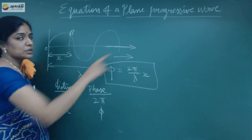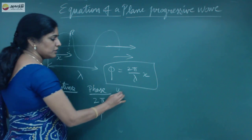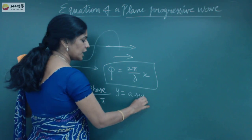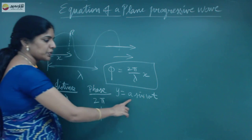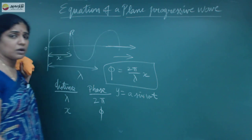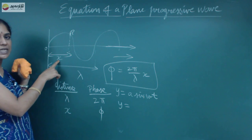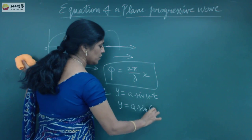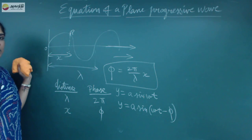We need to learn the equation of a progressive wave. We know that at any instant of time, the displacement formula — already covered in the sixth lesson — is y = a sin(ωt), where a is the amplitude and ω is the angular frequency. But at point P, which is at a distance x from the origin, this gives us the displacement equation for the wave.